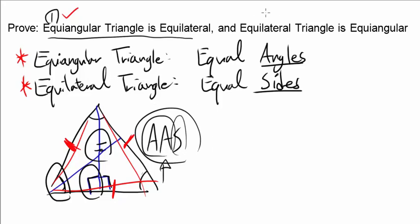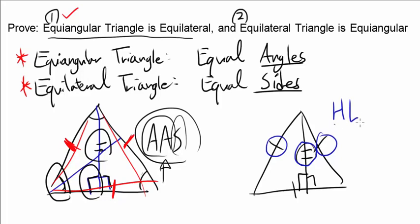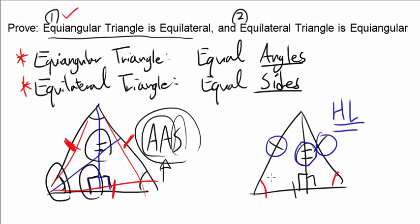Now let's prove the second part: an equilateral triangle is equi-angular. Let's draw a triangle with three equal sides and drop the perpendicular down once again. You know this side is congruent to itself, and you know this is 90 degrees. Because you have a right triangle, and you know the hypotenuses are the same and one leg is the same, this is the case for hypotenuse-leg congruence. So you know the triangle to the left and the triangle to the right are congruent, which tells you the corresponding angles — this one and this one — are the same.